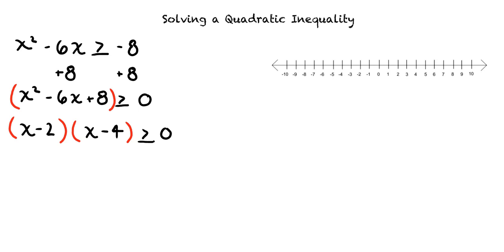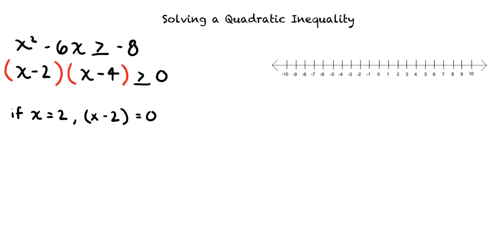Let's first look at a sign analysis for x - 2. If x = 2, then x - 2 = 0. If x < 2, then x - 2 is negative. If x > 2, then x - 2 is positive. We can represent this on a number line as follows.